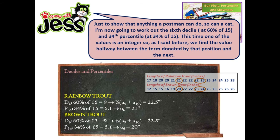Just to show that anything a postman can do, so can a cat, I am now going to work out the 6th decile, at 60% of 15, and the 34th percentile, at 44% of 15. This time, one of the values is an integer, so, as I said before, we find the value halfway between the item denoted by that position and the next.